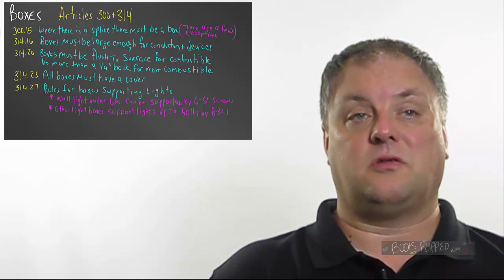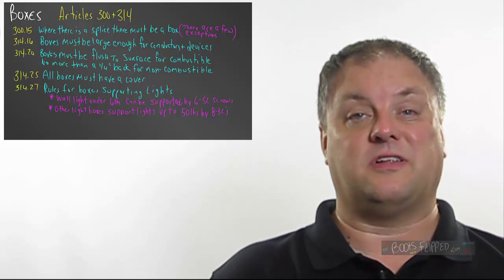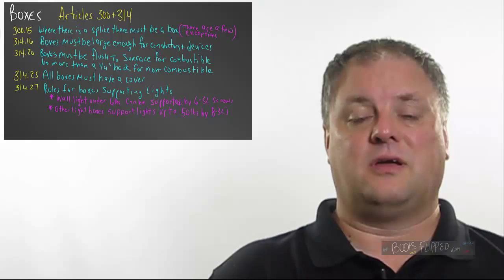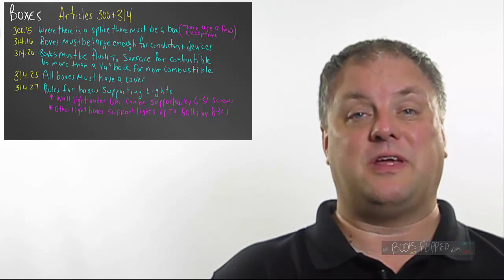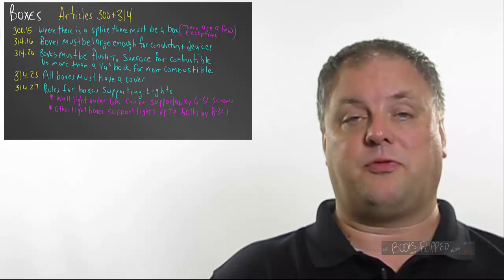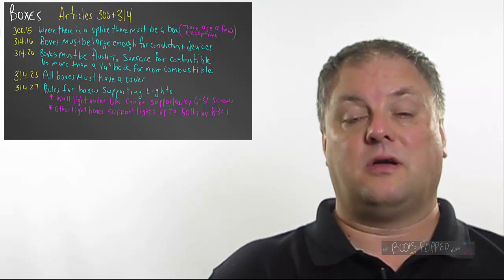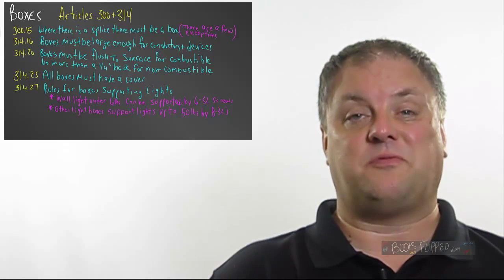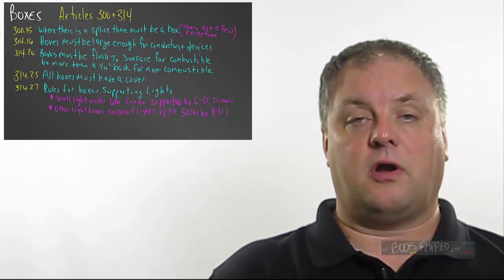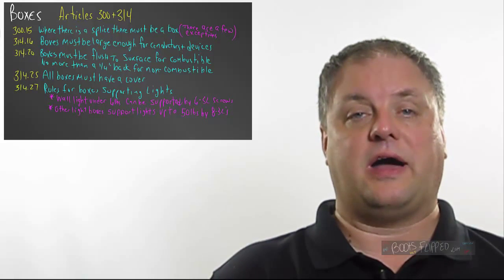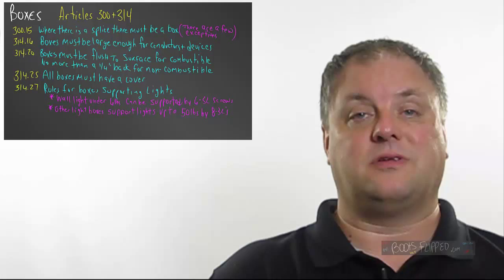You find a splice behind a wall. Not code. And that's where you find it in code. So if anybody ever wants you to do that, point it out. 300.15. No splices except for in a box. Now there are some exceptions that we'll go through in class. But for the most part, if there's a splice, there's got to be a box.